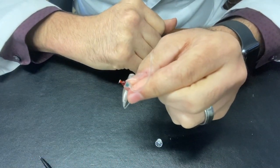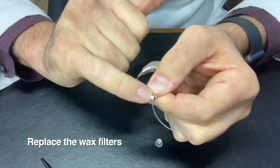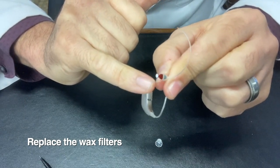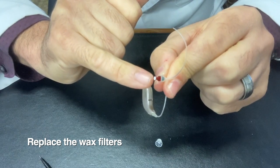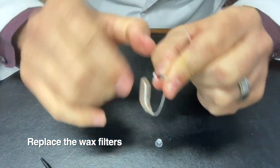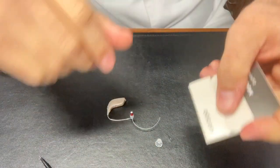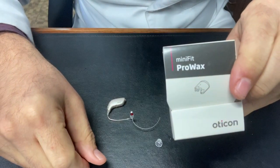The next thing we're going to do is change the wax filter. You can see this little white part in the end here, that white tip after we take off the dome. What we'll do is get some wax filters and open that up.